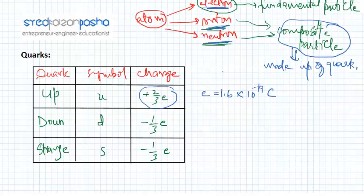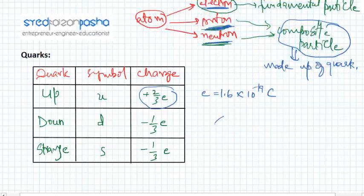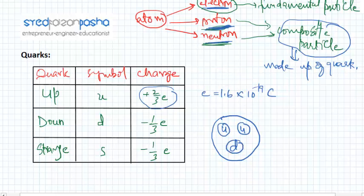So the up quarks combine to make up a proton. Let's look at this: this is a proton. Inside a proton there are two up quarks and one down quark. Two up quarks and one down quark together make one proton. So this is a proton that contains two up quarks and one down quark. Inside the proton, the up quarks and down quarks interact with each other due to weak nuclear forces.